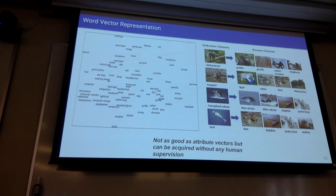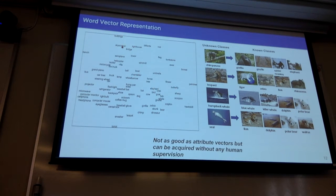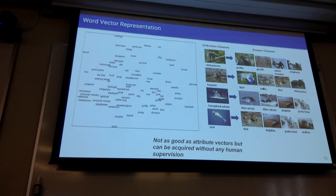Another alternative is to use word vectors — a vector representation of a word that contains the semantic meaning of that word. If I plot words based on their word vectors, you can see that cow, dog, zebra, and goat cluster together, while buildings like skyscraper and lighthouse cluster separately. Word vectors can tell you which objects are similar. However, word vectors can be confusing sometimes — for chimpanzee we might get zebra instead of gorilla. But the advantage is they come for free: you can use unsupervised learning to extract word vector representations, which is helpful when you have lots of object classes.